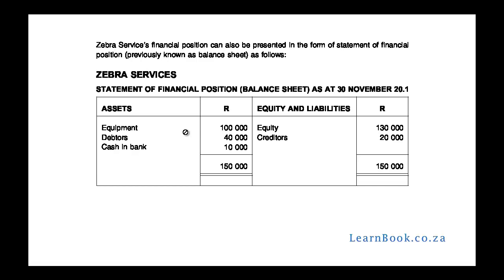Zebra Services' financial position can also be presented in the form of a statement of financial position, previously known as the balance sheet. On the left-hand side, equipment is $100,000, debtors are $40,000, and cash in the bank is $10,000. Equity and liabilities are put together to give $150,000 on the right-hand side. This is also the BAE: assets equals owner's equity plus liabilities, which equals $150,000.